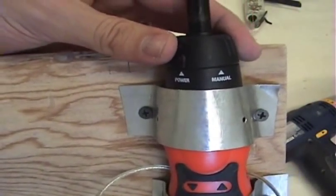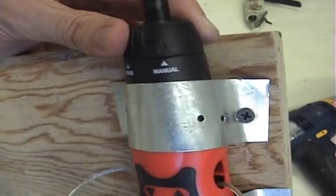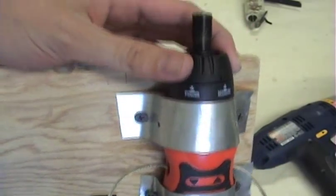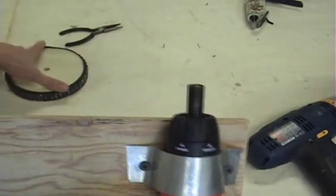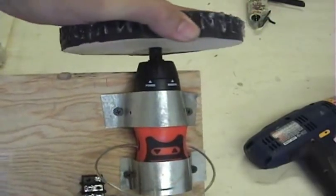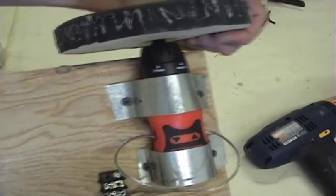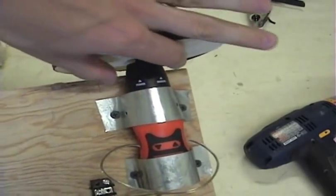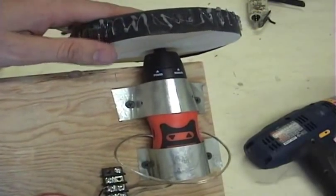Another good thing about these motors is they have the switch here to go to manual. So whenever I try to put on a wheel, it helps to put it to manual. Because then as I'm trying to push it on there, the whole motor doesn't spin. It locks it in place and then I can put the motor on exactly where I want it, and then switch it back to power and it's good to go.